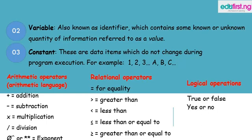For example, constants can be 1, 2, 3, A, B, C. We also have operators used for operations with different signs. Under arithmetic operators, we have addition, subtraction, multiplication, division, and exponent. Each of them has specific signs used to represent them.